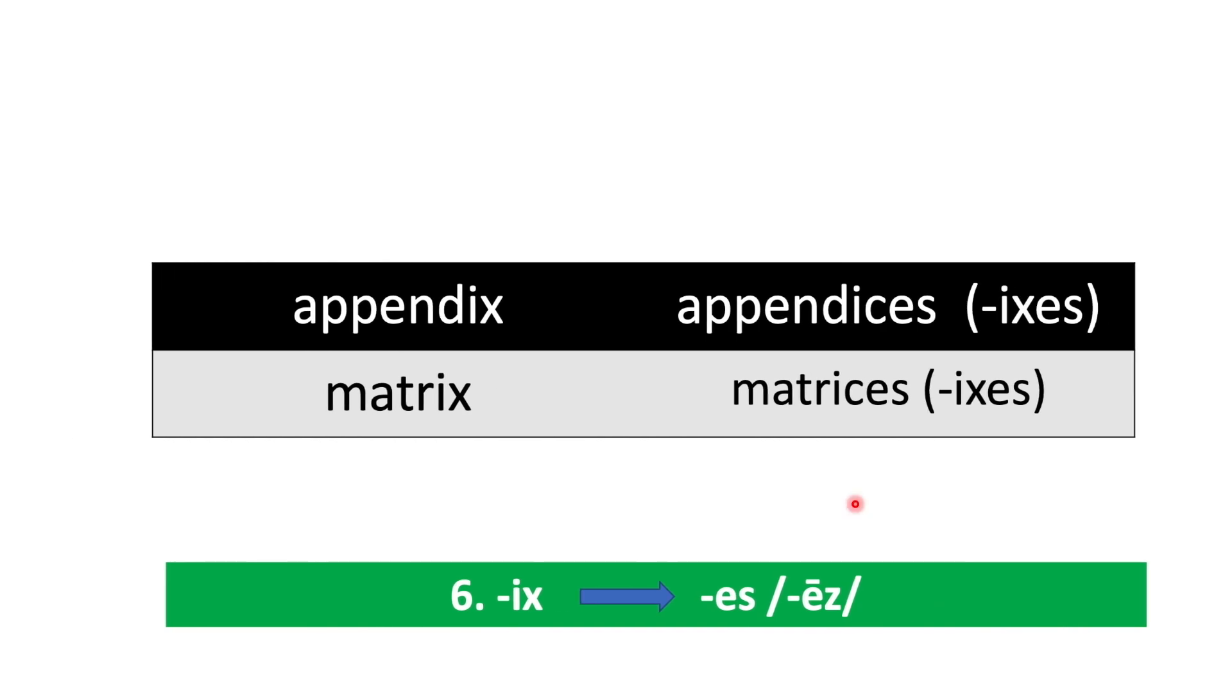For the sixth one: words ending with x for singular and for the plural, es or ices. So for es and ices, the sound is ease. Such as appendix/appendices or appendixes, matrix/matrices or matrixes.